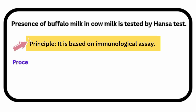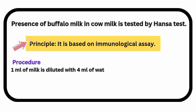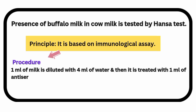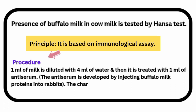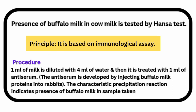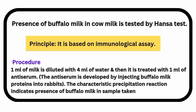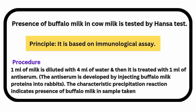The Hansa test principle is based on immunological assay. 1 ml of milk is diluted with 4 ml of water, and then it is treated with 1 ml of anti-serum. The characteristic precipitation reaction indicates the presence of buffalo milk in the sample taken. Note that the anti-serum used in this test is developed by injecting buffalo milk proteins into rabbits.